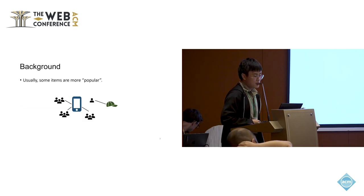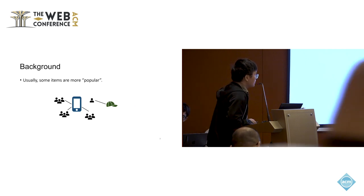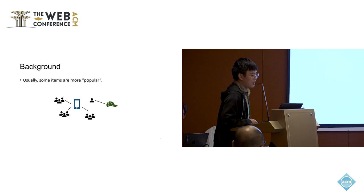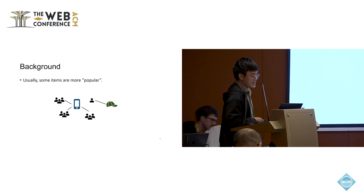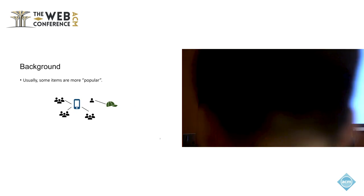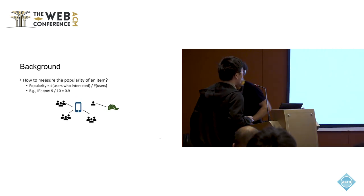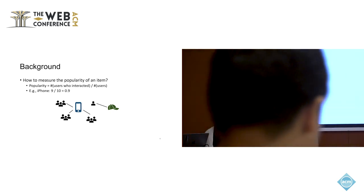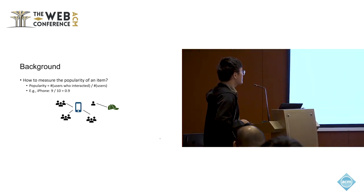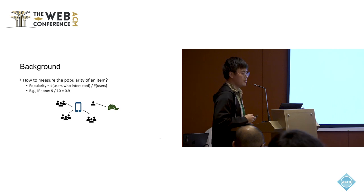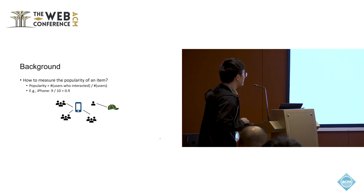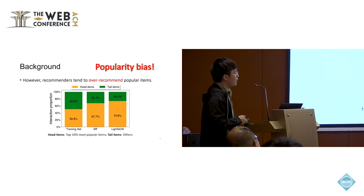In recommendation systems, some items are more popular than others. For example, in this figure we have ten users and the iPhone has been interacted with by nine users, so it is more popular. In existing literature, item popularity is measured as the number of users who interacted with the item divided by the total number of users — so the iPhone's popularity is 9 over 10, which equals 0.9.